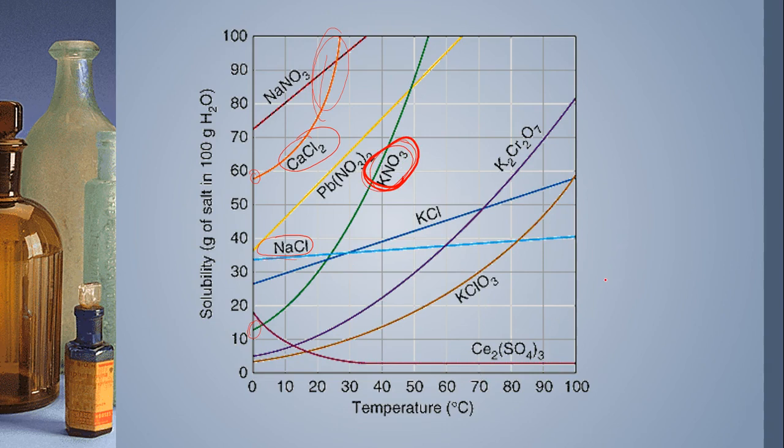Which one of these actually becomes less soluble as temperature goes up? That would be this one, the Ce2(SO4)3, because the graph actually goes down. It actually becomes less soluble as temperature goes up. What that means is that this is likely a gas. Gases become less soluble with increases in temperature. So if you had to guess, if something decreases with temperature increase, guess that as a gas.